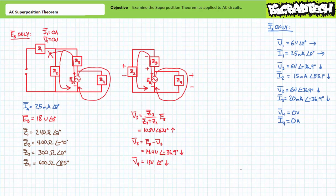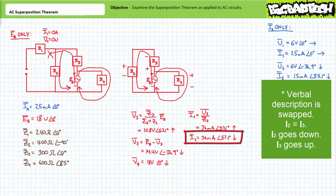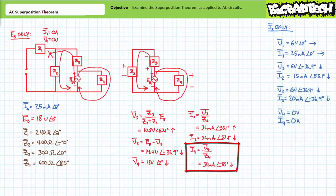Now let's consider current. An application of Ohm's law demonstrates I2 will be 36 milliamps at an angle of 53.1 degrees traveling bottom to top. Given Z2 and Z3 are in series, I3 will also be 36 milliamps at an angle of 53.1 degrees, though the assumed direction of travel here is top to bottom. Finally, Ohm's law demonstrates I4 will be 30 milliamps at an angle of negative 85 degrees traveling top to bottom. The series-parallel circuit analysis from the perspective of voltage source EB is now complete.